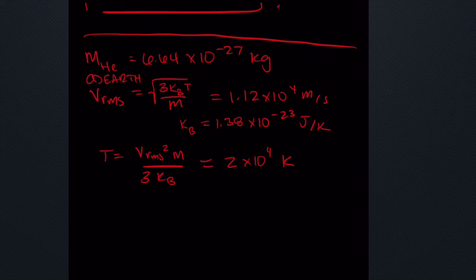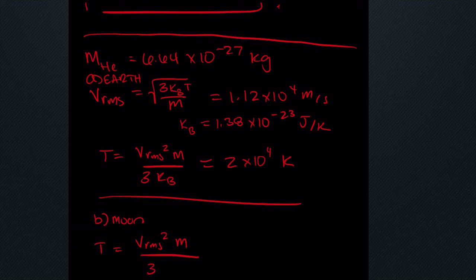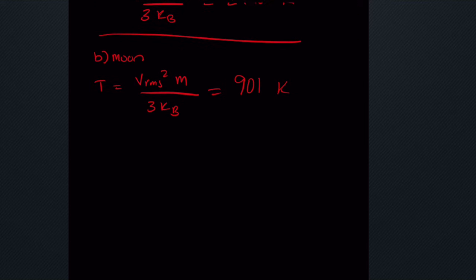For part B — the Moon — the same equation applies: T equals v_rms squared times mass over (3 times k_B), using the Moon's escape velocity. This gives 901 kelvin, a much more achievable temperature. So helium atoms need to be far less energetic to escape the Moon's gravity compared to Earth's.